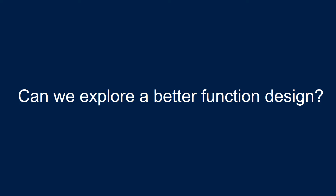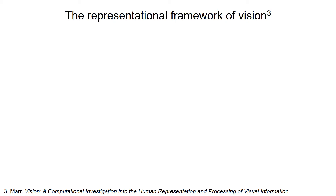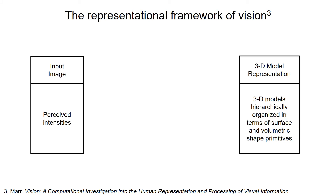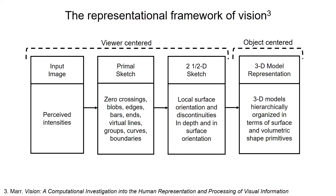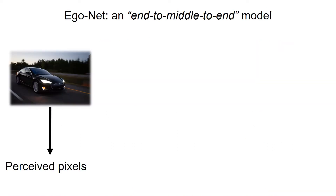The natural question to ask is whether we can do better with a different design. We are inspired by the representational framework of vision. To understand 3D properties from images, Marr devised a progressive process where some geometrically meaningful representations are present in the middle of this perception process. Thus we devised a model featuring so-called end-to-middle-to-end learning.